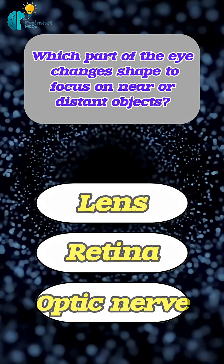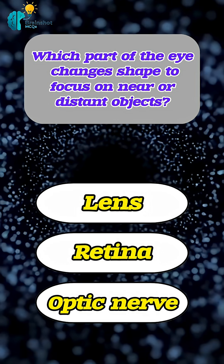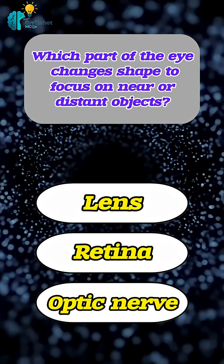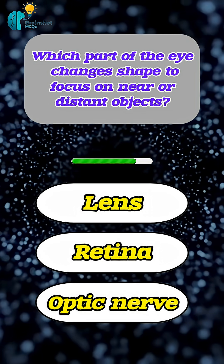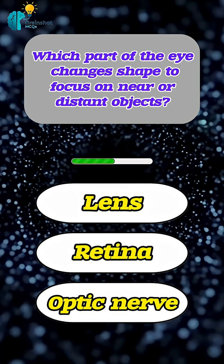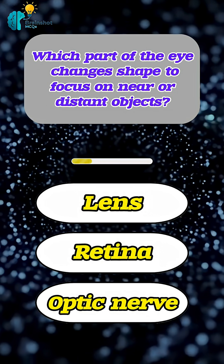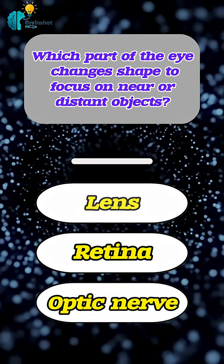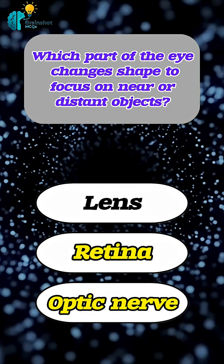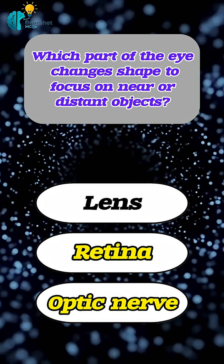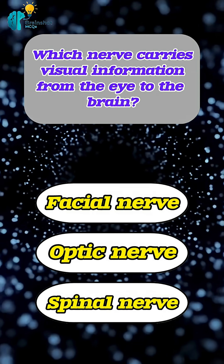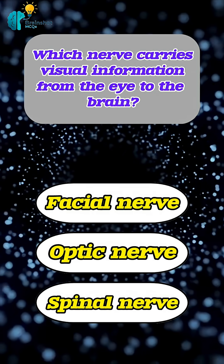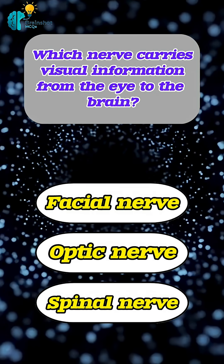Which part of the eye changes shape to focus on near or distant objects? Correct answer: lens. Which nerve carries visual information from the eye to the brain?